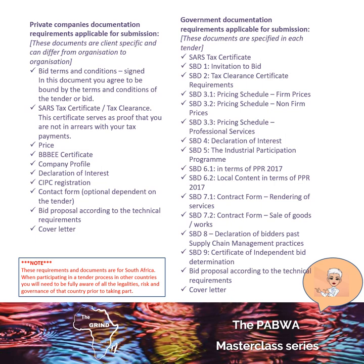The tax certificate is very important for private companies, as well as your BEE certificate. Any declarations, your CIPC registration, your bid proposal, and your agreement to terms and conditions. What you will find with private companies is that they generally send out their contract with their tender document, so you can already start commenting on or agreeing to clauses as part of the bid process. It's not just a tick-box exercise — you need to go through all those legal terms and conditions and agree or disagree. It's very important because you will find yourself in trouble if you win the bid and then don't agree to their terms and conditions.